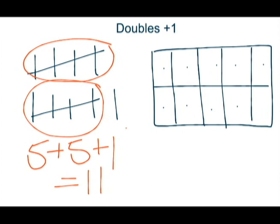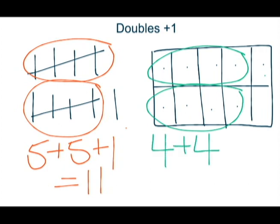In this ten frame there's five at the top and four at the bottom. So students are using the property of doubles that they already know which is four plus four and they're adding one more. So four plus four is eight plus one more is nine. So they would count four, eight, nine.